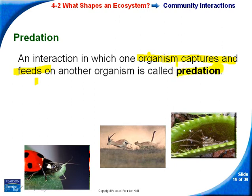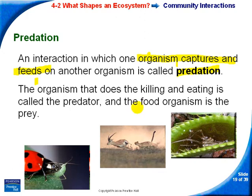Predation is when one organism captures and feeds on another. The organism that does the killing and eating is called the predator; the food organism is the prey. Examples include a ladybug eating an aphid, a cheetah chasing an impala, and a Venus flytrap eating a spider.